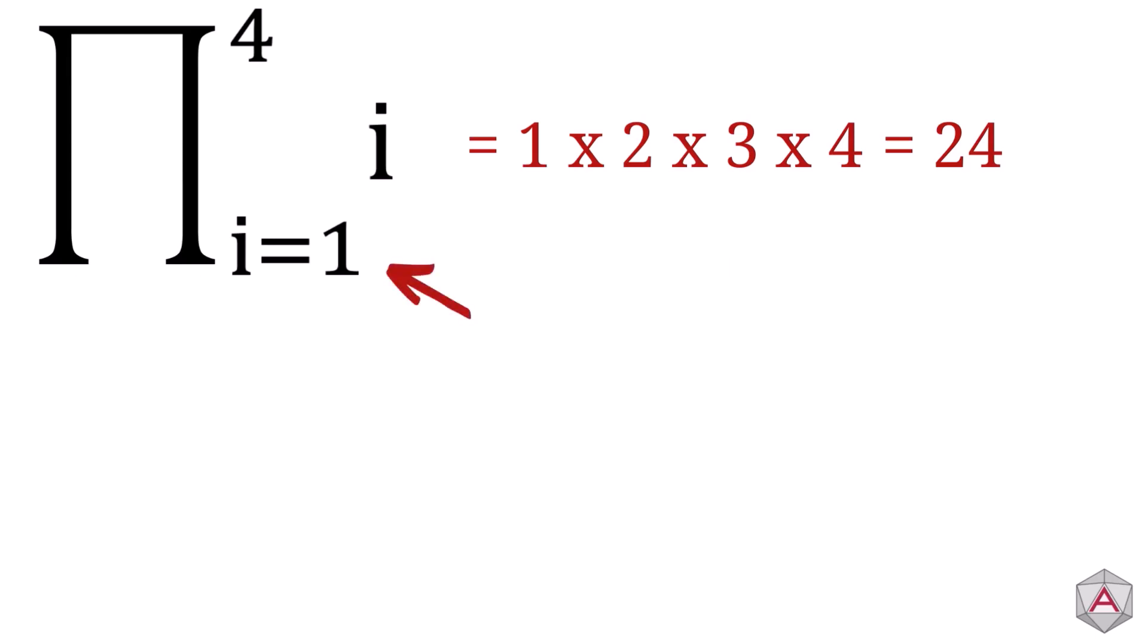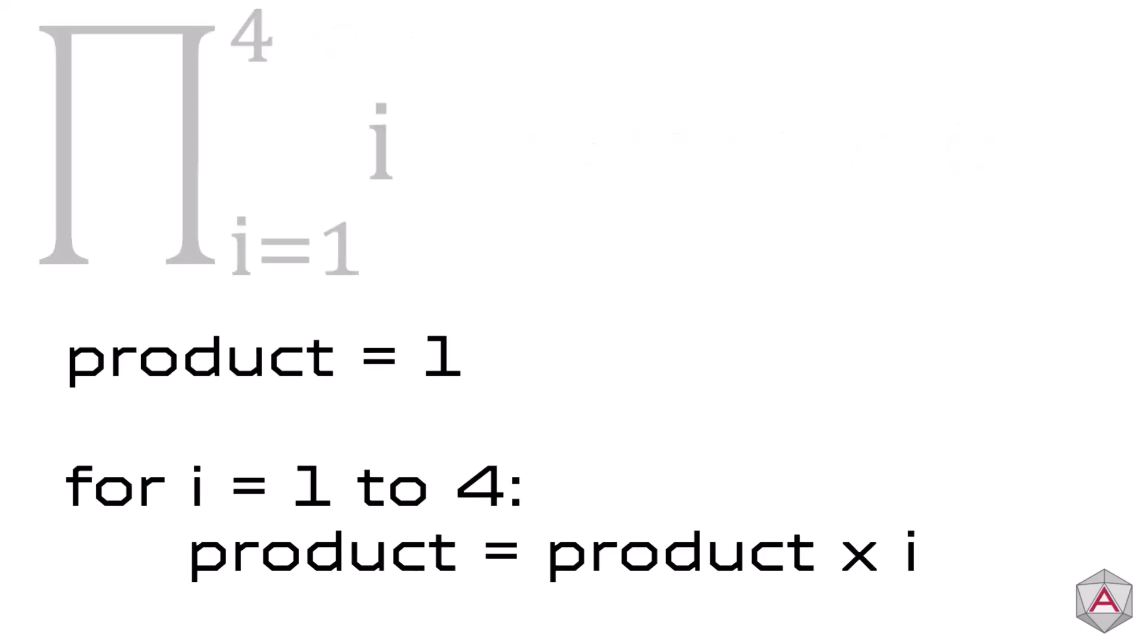Just like sigma, i tells us where to start, in this case 1, and the number at the top tells us where to stop at 4.